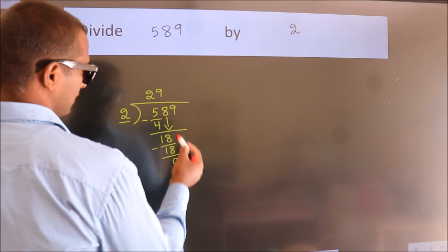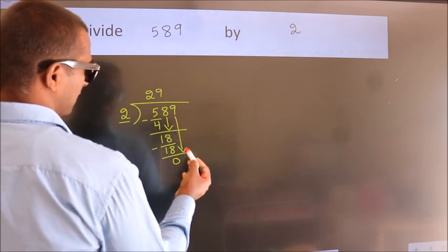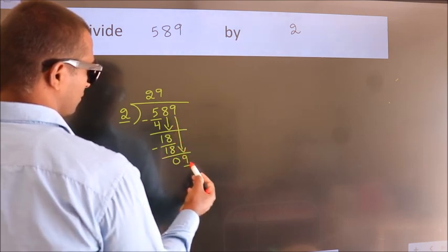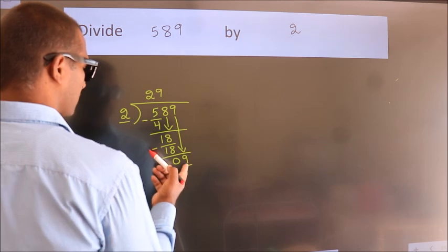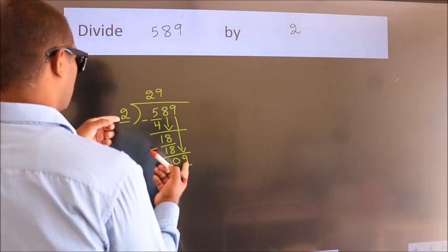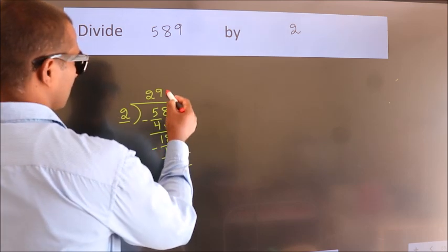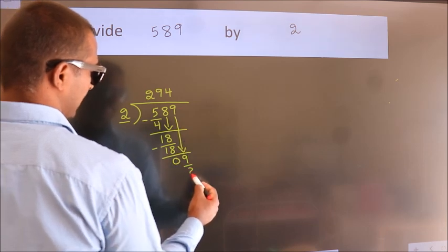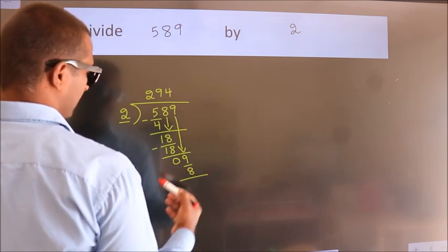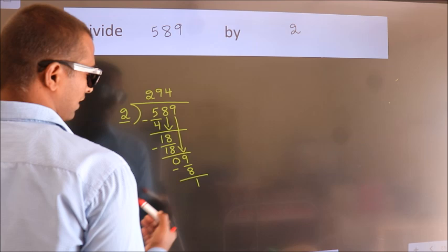After this, bring down the beside number. So 9 down, making 9. A number close to 9 in 2 table is 2 times 4, which is 8. Now we subtract. We get 1.